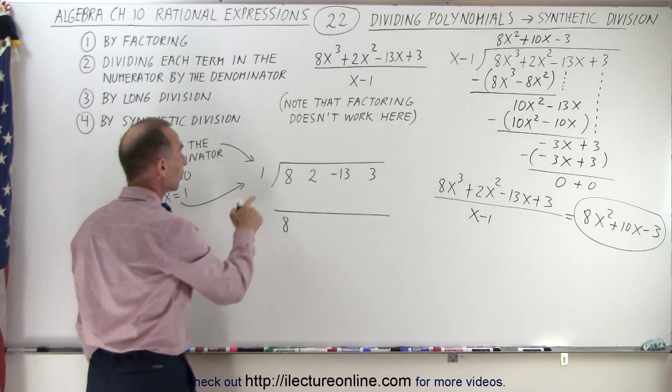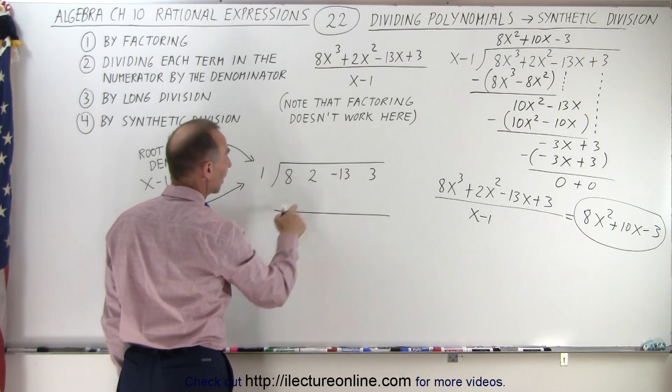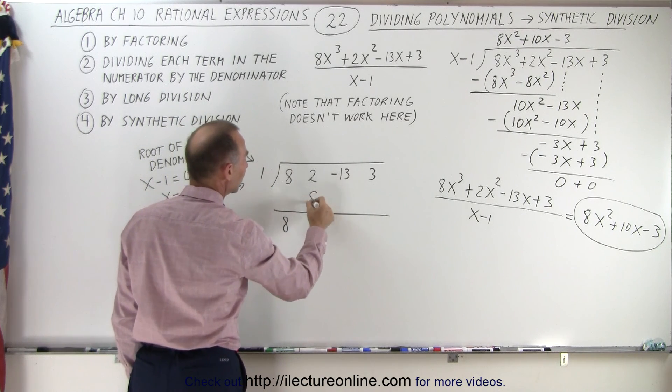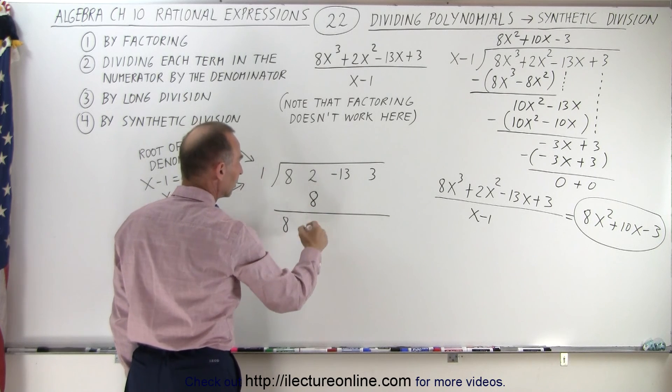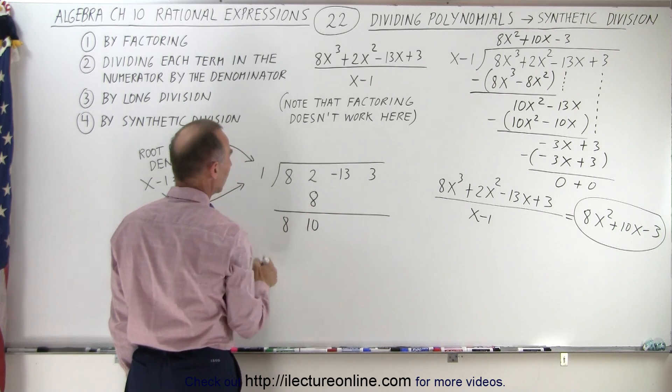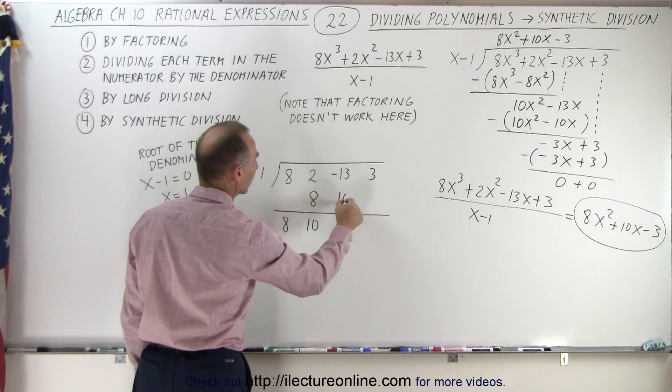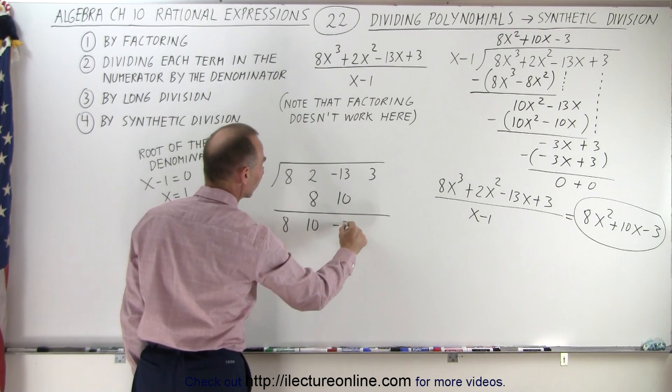Now what we do is we multiply this number times 8 and put it there. So 1 times 8 gives us 8, then we add those two together, that gives us 10. Then we multiply 1 times 10 and we put it here, we add the two together, we get minus 3,